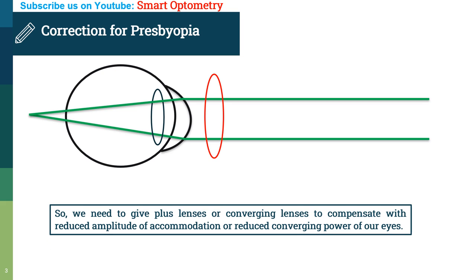So, we need to give plus lenses or converging lenses to compensate with reduced amplitude of accommodation or reduced converging power of our eyes, so that the rays can focus on the retina.